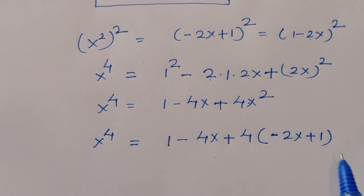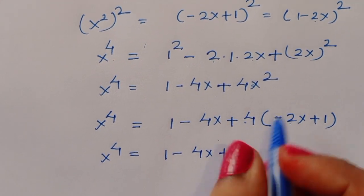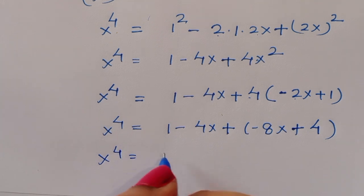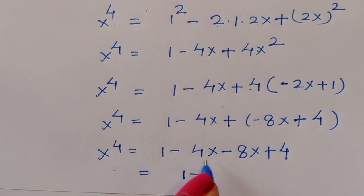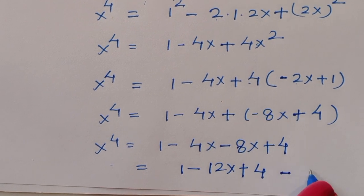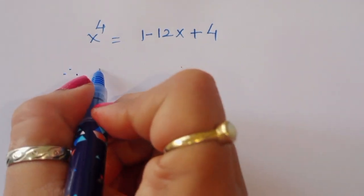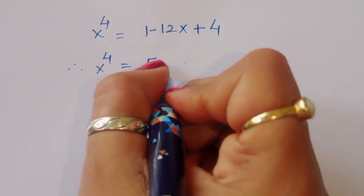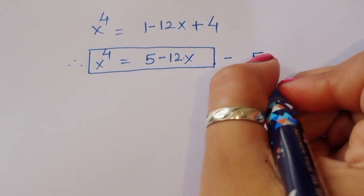So x⁴ = 1 - 12x + 4 = 5 - 12x. This is equation number 5: x⁴ = 5 - 12x.